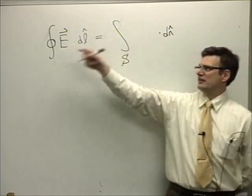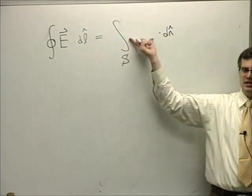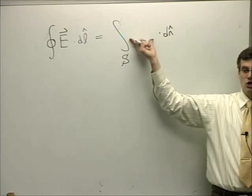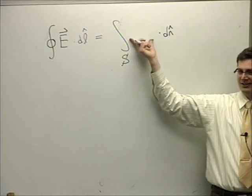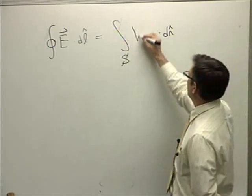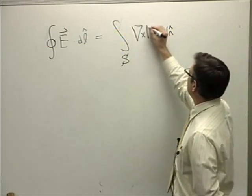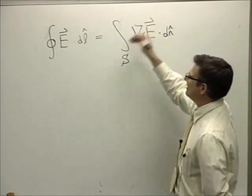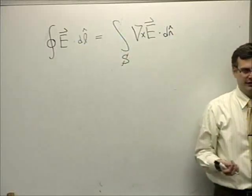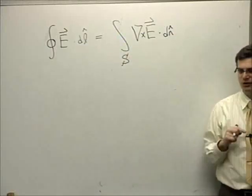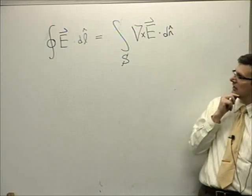What do I have to do to complete that mathematical relationship? If E is my field, Stokes' theorem says this should be the curl. Did you say curl? Yeah, good. Curl of E. And again, this is true for any vector, not just electric field. It's a mathematical property, not a physical property.